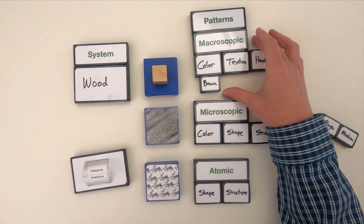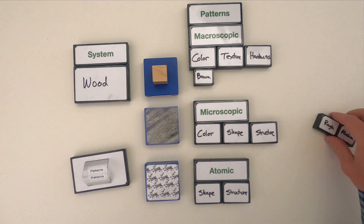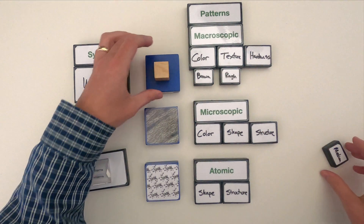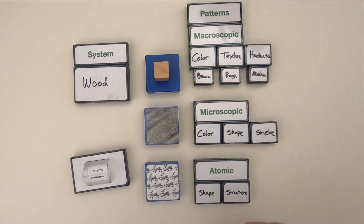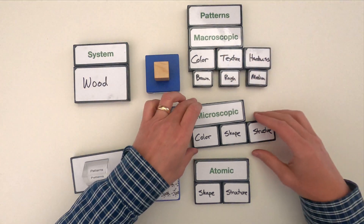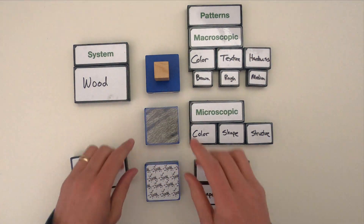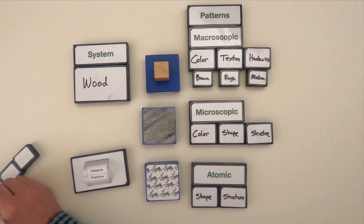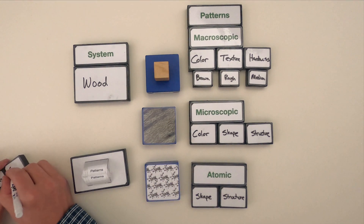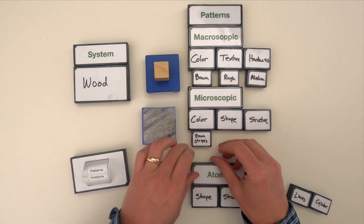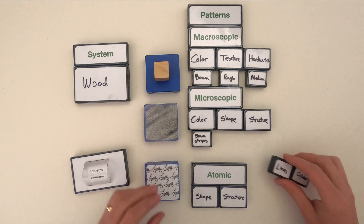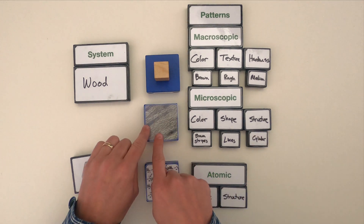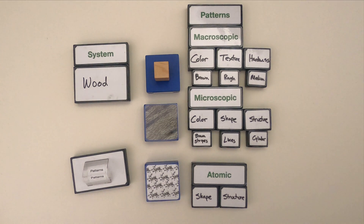At the macroscopic level, one of the patterns I see is the color is brown. If you feel wood, its texture is rough — this one's been sanded but it's rough. And its hardness, I'm saying medium: I could scratch wood if I really tried with my fingernails. Now at the microscopic level, I see the color being kind of brown but with different stripes. The shape shows long lines, and the structure almost looks like cylinders — like little tubes connected together.